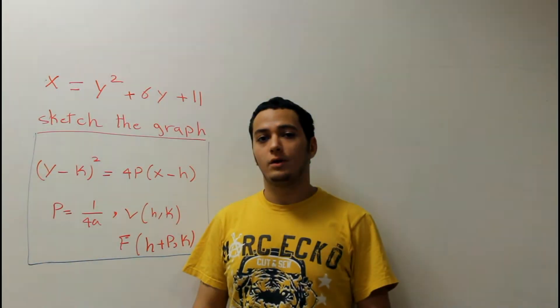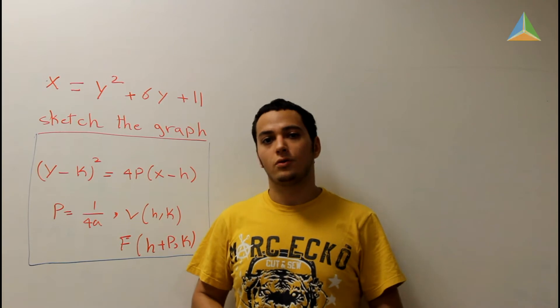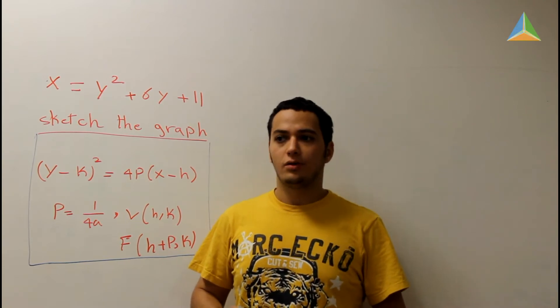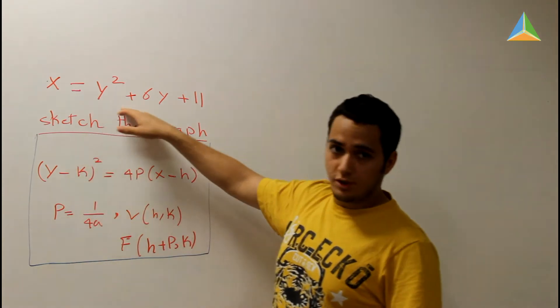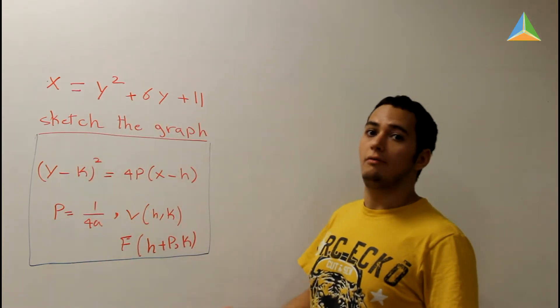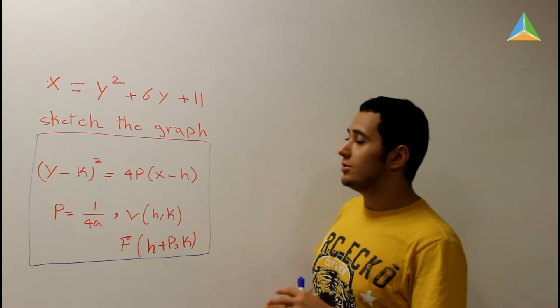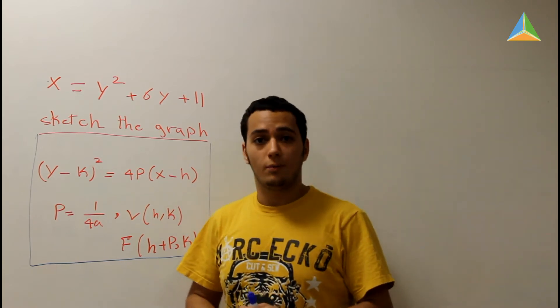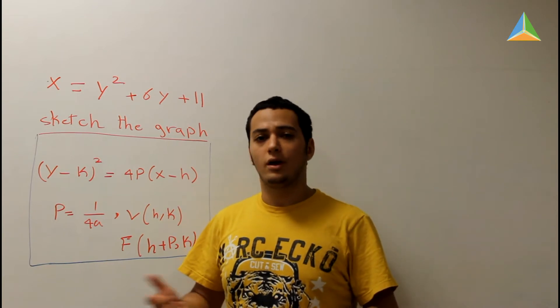Hi everyone, today I will be explaining an example in pre-calculus, which is how to graph a parabola. There are many equations for parabola. Usually it gives you an expression and then asks you to graph that expression. By looking at that expression, you can determine whether it's a parabola, ellipse, hyperbola, or any kind of graph.